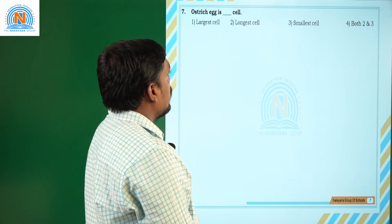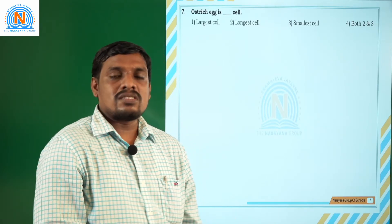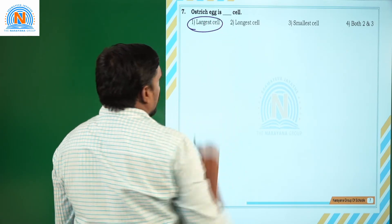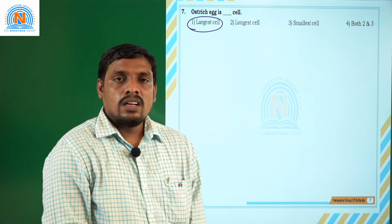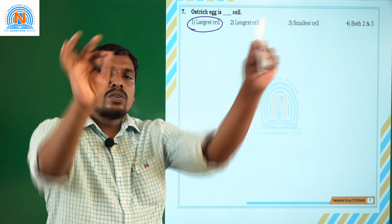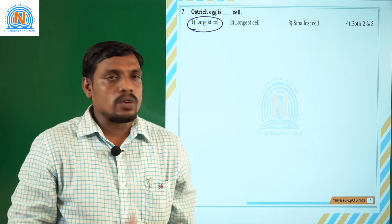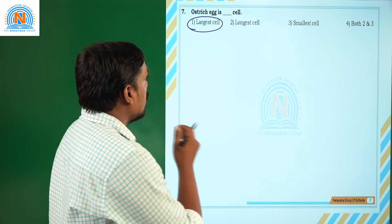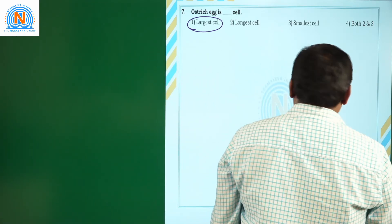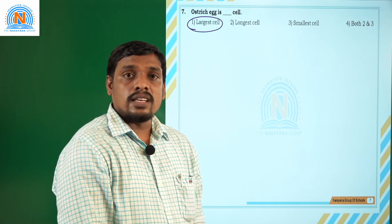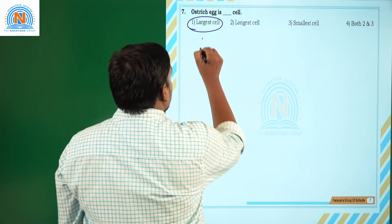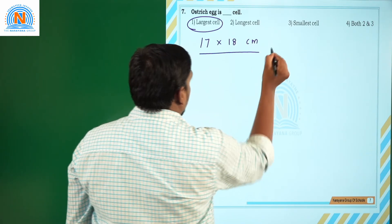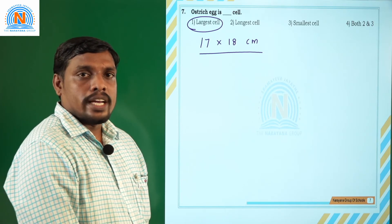Next question: the ostrich egg is a dash cell. An ostrich egg is the largest cell in the animal kingdom. The size of an ostrich egg cell is 17 by 18 centimeters.